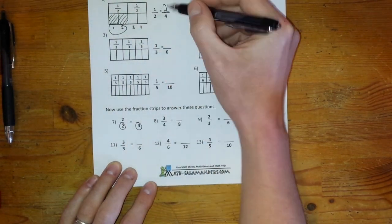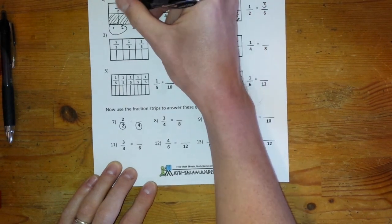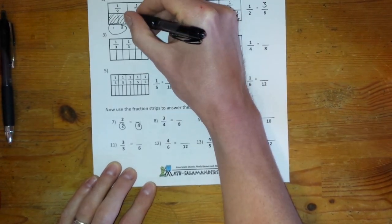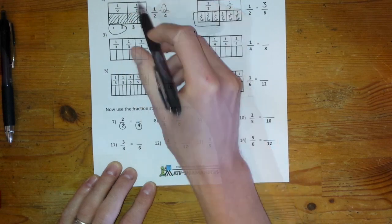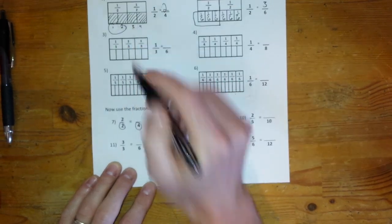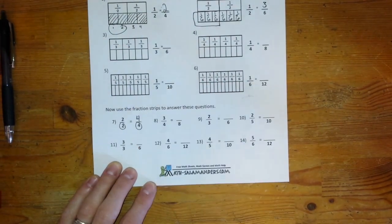So one half is equal to two fourths, but now they want to say if I have both of these pieces, how many fourths do I have? So if I have one half and one half, I also have four fourths.